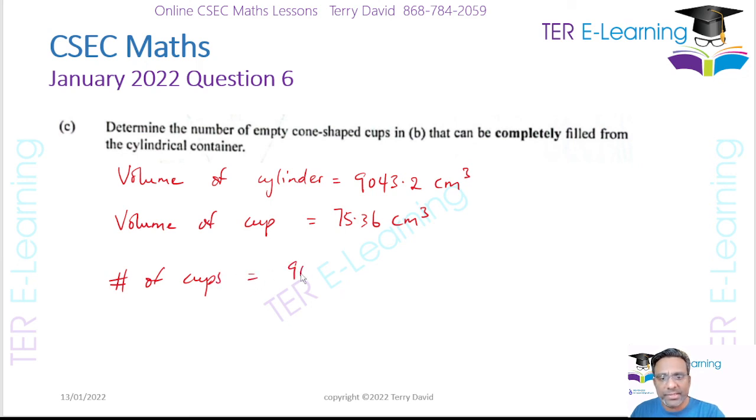Therefore the number of cups that can be filled: all we need to do is take the 9043.2 and divide that by the volume of one cup, 75.36. That's 9043.2 divided by 75.36, and I'm going to get 120 cups.